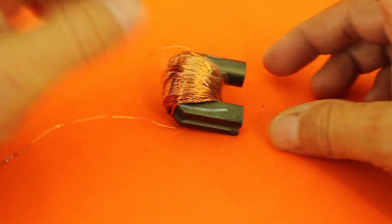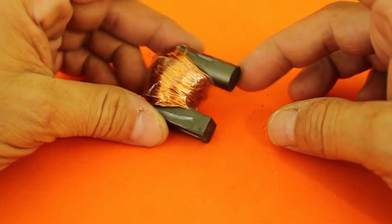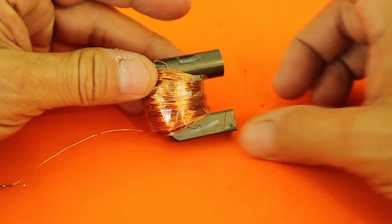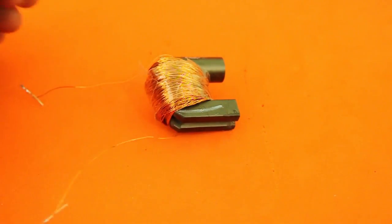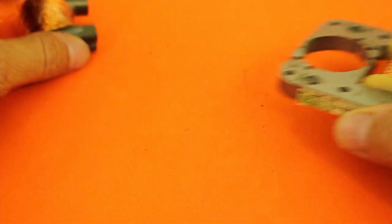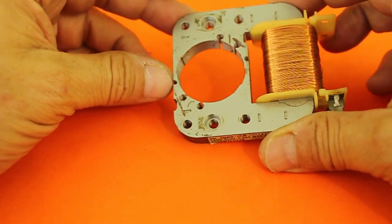In my case, I used the core of an old flyback because it is what I had at hand, but normally electric motors use a laminated iron core such as this one.